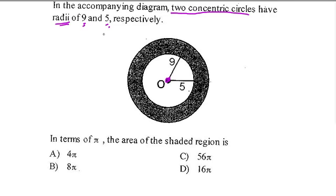of 9 and 5, respectively. Which means that this smaller circle has a radius of 5, and this larger circle has a radius of 9. So 5 and 9, those are two radii of these two different circles.